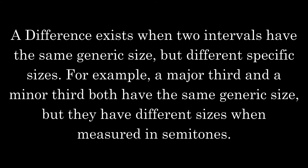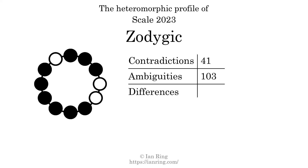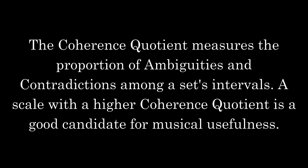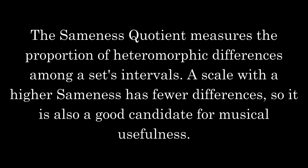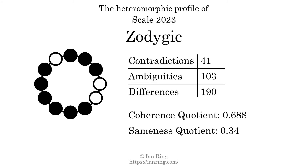A difference exists when two intervals have the same generic size but different specific sizes. For example, a major third and a minor third both have the same generic size but different sizes in semitones. The number of differences in this scale is 190. The coherence quotient measures the proportion of ambiguities and contradictions among a set's intervals; a higher value indicates greater musical usefulness. The coherence quotient is 0.688. The sameness quotient measures the proportion of heteromorphic differences; a higher sameness means fewer differences. The sameness quotient is 0.34.